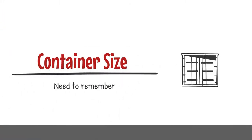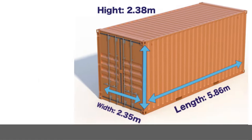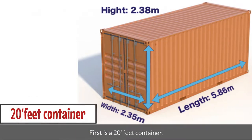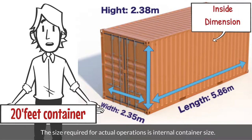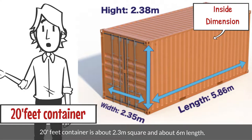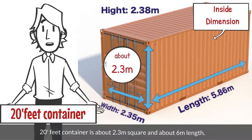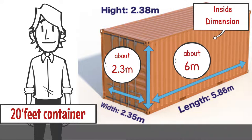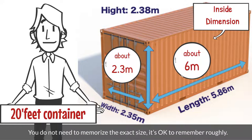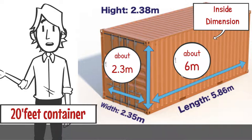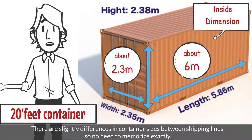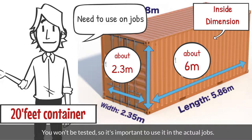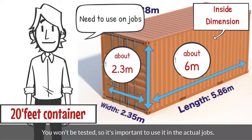Next, let's talk about the size of containers. First is the 20-feet container. The size required for actual operations is the internal container size. A 20-feet container is about 2.3 meters square and about 6 meters in length. You do not need to memorize the exact size — it's okay to remember roughly, as there are slight differences in container sizes between shipping lines. You won't be tested, so it's important to use this knowledge in actual jobs.